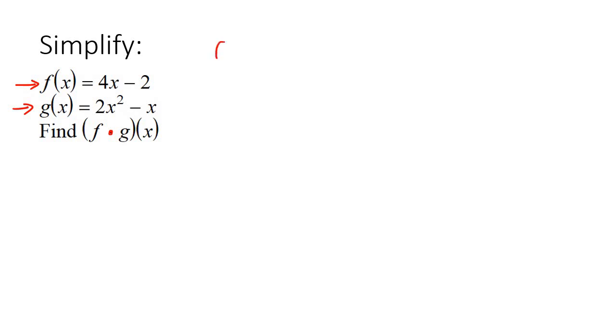So all we'll do is go f·g(x) equals to the first one in brackets, the second one in brackets, and then we'll just use FOIL. Remember, FOIL is a nice way to remember how to multiply the two brackets together. The F stands for first and first, so that's the first one and the first one. If you multiply those two together, you're going to end up with 8x³.